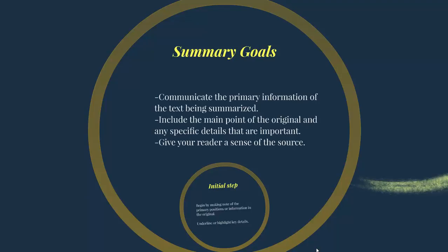You'll want to include the main point of the original as well as any specific details that are important. But because this is a summary, it's always going to be less than what was in the original — you won't be able to include every detail. You also want to give your reader a sense of the original source, so they could go back and look at it, and so they know the information comes from that source and not from you.